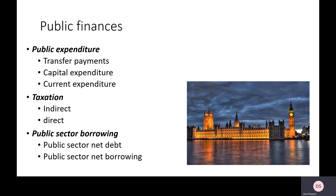There are three different types of public expenditure: transfer payments, capital expenditure, and current expenditure. Then we have taxation — the next video — covering direct and indirect taxes. Finally, the last video covers public sector borrowing: how the government borrows money, the consequences of borrowing, and how a government might pay down accumulated debt.